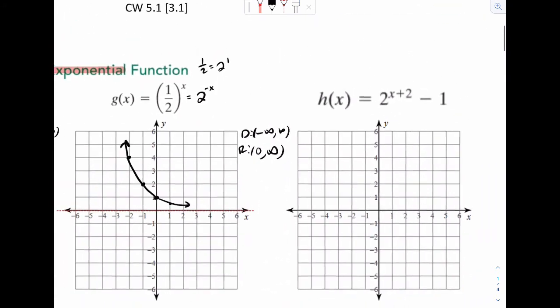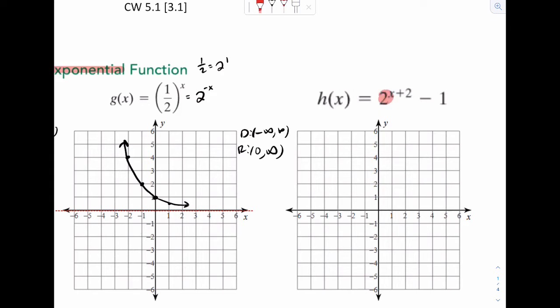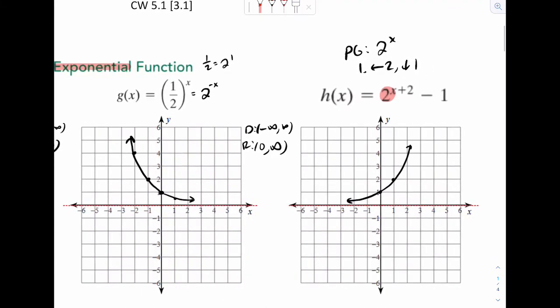Now here's our last one. The first thing you want to recognize is right here, that's your parent graph. So if you want to see, I'm going to move 2 to the x, then I can see it's going to move left 2 and down 1. So you can imagine the original 0, 1, 1, 2. And then here's your asymptote. And all we're going to do is grab this whole thing and move it left 2, down 1.